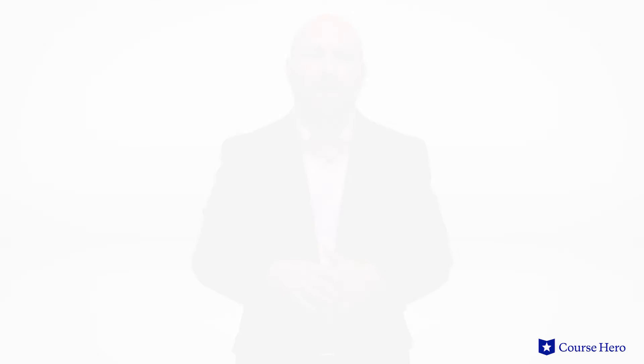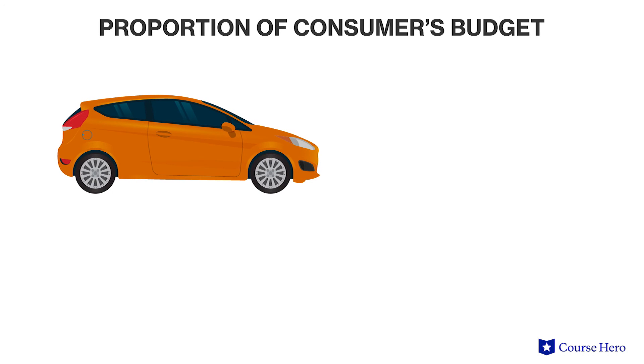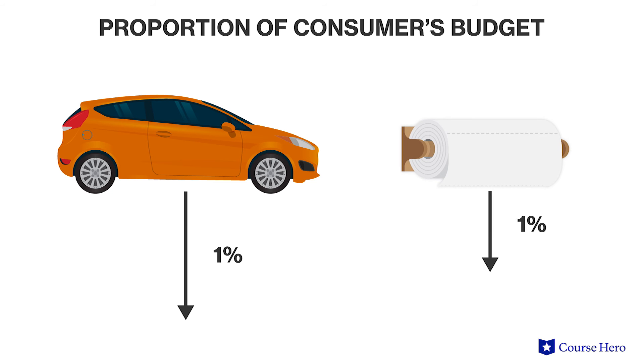The fifth factor is the proportion of consumers' budgets accounted for by the good. A 1% decrease in the price of a car will have a much larger impact on a consumer than a 1% decrease in the price of paper towels. Although both may be important to consumers, the demand for cars will be more responsive and therefore more elastic.